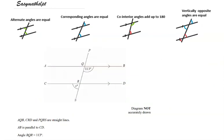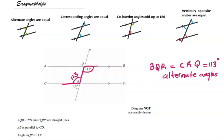So let's try this exam problem. 113 is alternate to R, which means R is 113 also. R is on a straight line with X, which means 113 plus X need to add to 180. Another way we can say this is angle BQR is equal to angle CRQ. You may see it worded like this in an exam - it equals 113 degrees. So X would be 180 take away 113, which gives us 67 degrees.